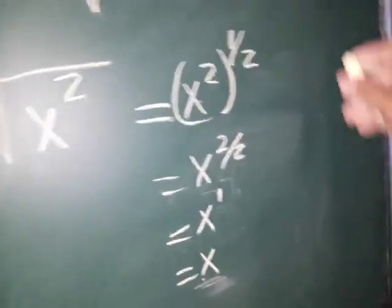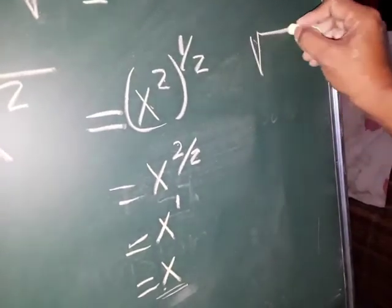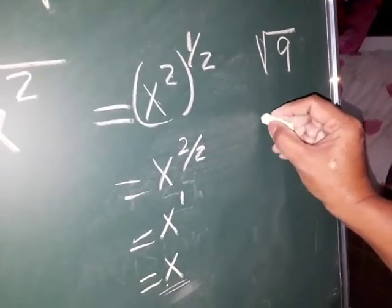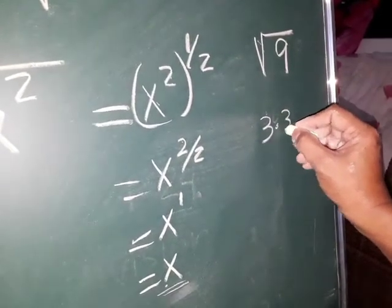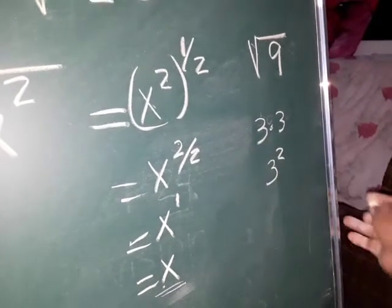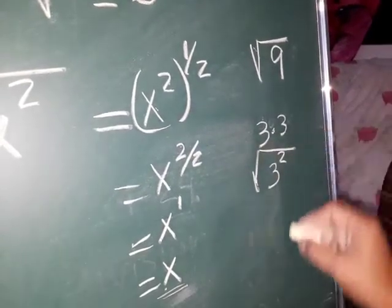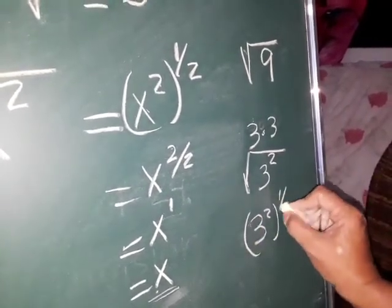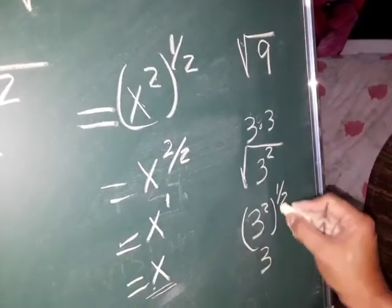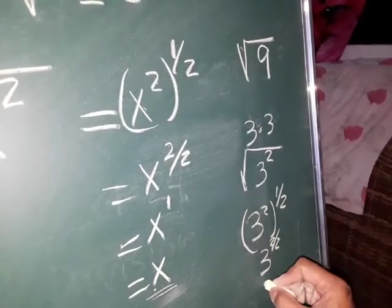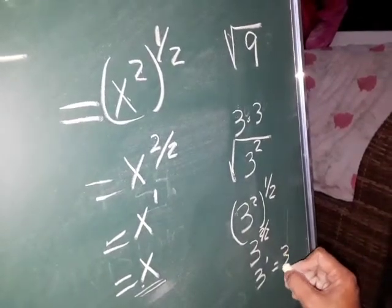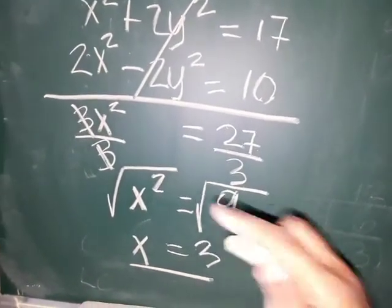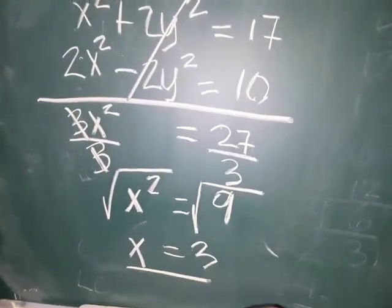And how about 9? The same. Square root of 9 — we can write 9 in factor form as 3 times 3, or 3 squared. If it is 3 squared and we put square root, that is exponent 1 half. So 3 squared times 1 half: 2 times 1 is 2 over 2, giving 3 raised to 1, or simply 3. That's why x squared equals 9 — just put a radical sign on both sides, and we have x is equal to 3.